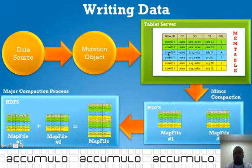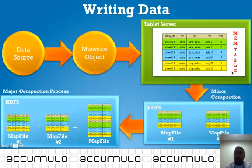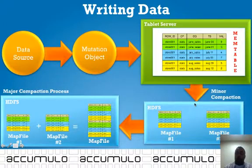A tablet server is essentially just a piece of the Accumulo cluster. The data is dumped into the mem table, and as it fills up, at some point you'll exceed the size of that mem table — whether it's 256 megabytes, 512 megabytes, or whatever is configured. Whenever this tablet fills up to the max memory capacity of the mem table, a minor compaction will occur. As the data is compacted, it will create one map file per compaction.